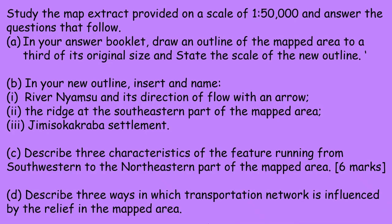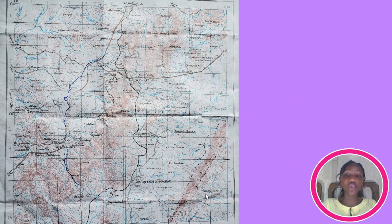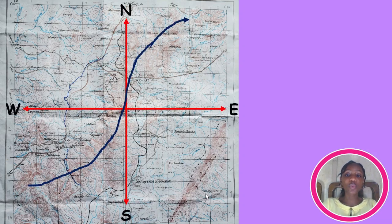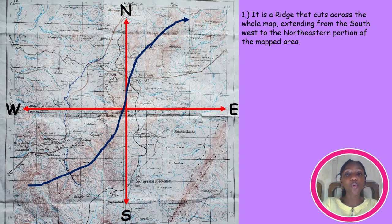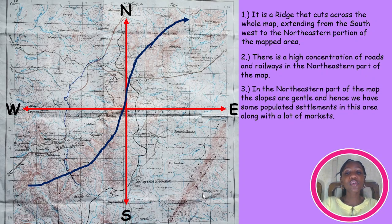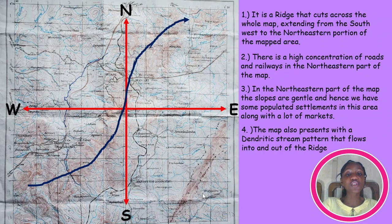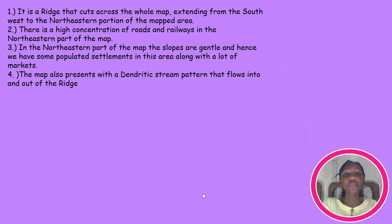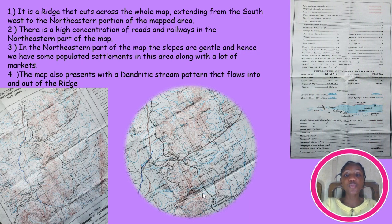Describe three characteristics of the feature running from the southwestern to the northeastern part of the map area. The feature is a very large ridge. Its characteristics include: it cuts across the whole map, extending from the southwest to the northeastern portion; there is a high concentration of roads and railways in the northeastern part of the map; the slopes in the northeastern part are gentle, with populated settlements and many markets; and the map presents a dendritic stream pattern flowing into and out of the ridge. These characteristics are deduced by comparing the ridge with the map key — the black and white markings represent railways, and capital M in settlements represents markets.